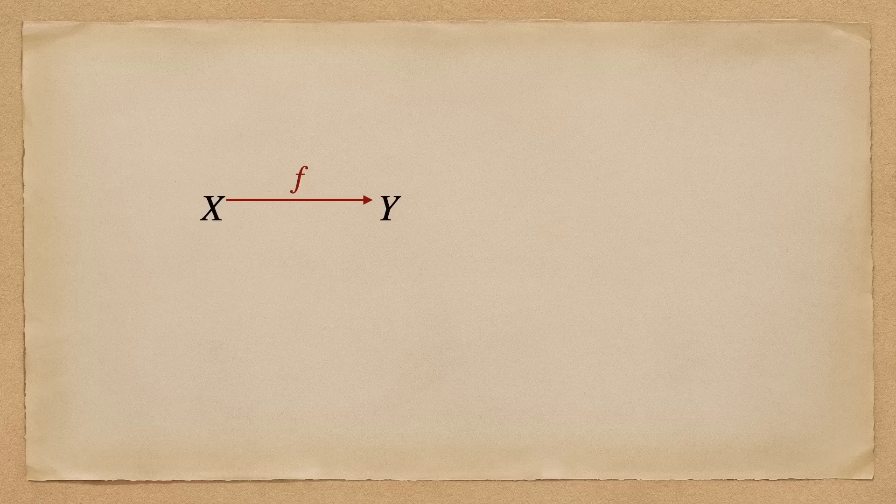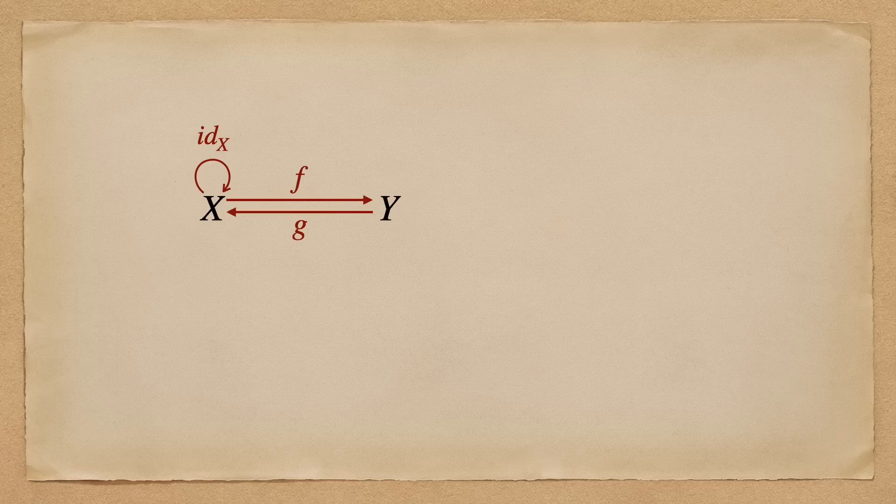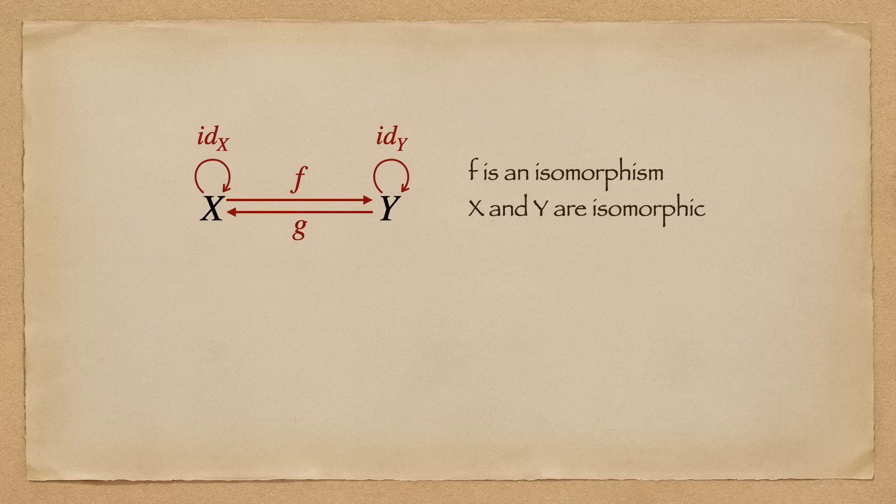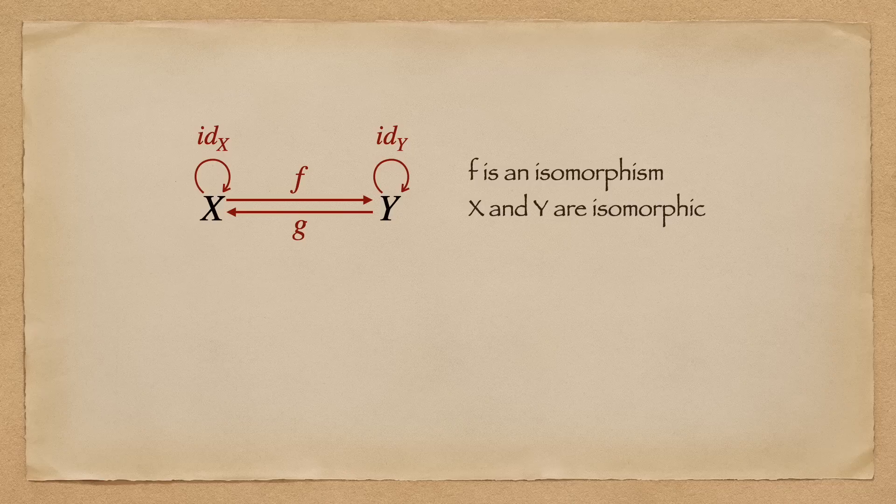An isomorphism in a category is a morphism f from x to y for which there exists a morphism g from y to x such that f and then g is the same as identity on x and g and then f is the same as identity on y. Here we say that f is an isomorphism and x and y are isomorphic.